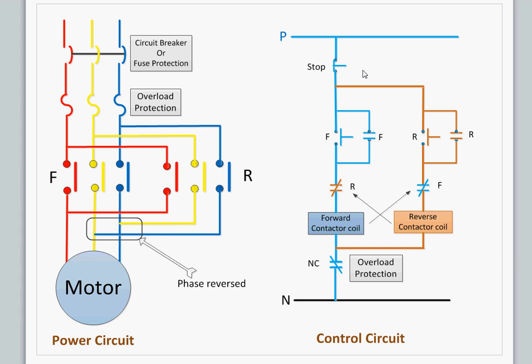Looking at the control circuit, the first is the stop button. When the forward push button is pressed, the forward contactor coil operates, ensuring the reverse contactor is closed and the overload protection has not operated.